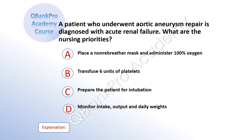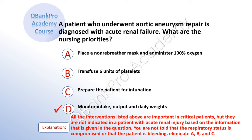A patient who underwent aortic aneurysm repair is diagnosed with acute renal failure. What are the nursing priorities? A: place a non-rebreather mask and administer 100% oxygen. B: transfuse six units of platelets. C: prepare the patient for intubation. D: monitor intake, output, and daily weights. Explanation: All the interventions listed are important in critical patients, but they are not indicated in a patient with acute renal failure based on the information given. You are not told that respiratory status is compromised or that the patient is bleeding. Eliminate A, B, and C.